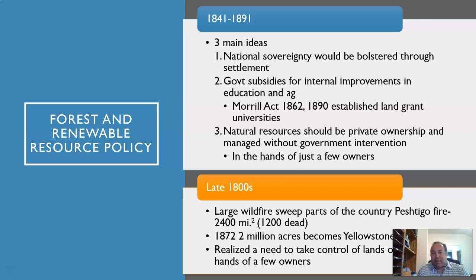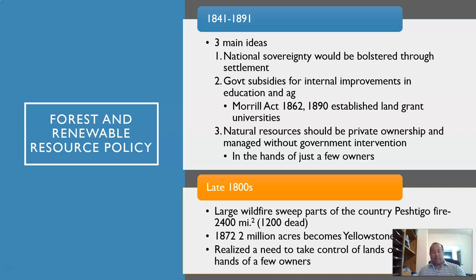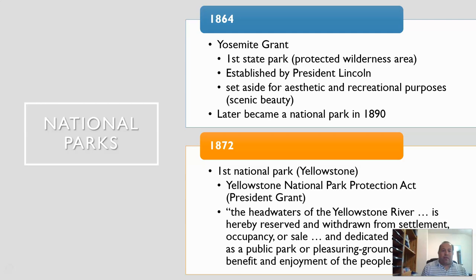In 1872, 2 million acres became Yellowstone National Park, marking the start of our national park system. With the idea that we wanted to protect some of these resources, and with this huge wildfire that killed so many people, the government started saying maybe we need to hold on to some of these lands and re-evaluate how we manage them.